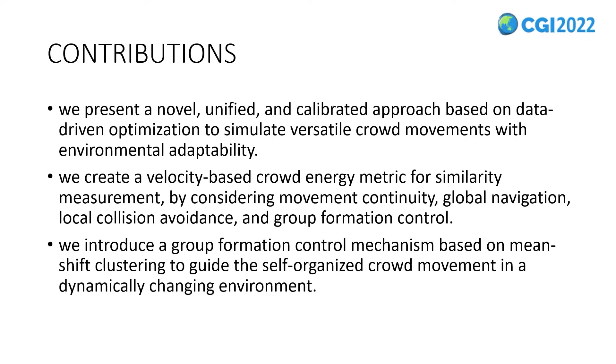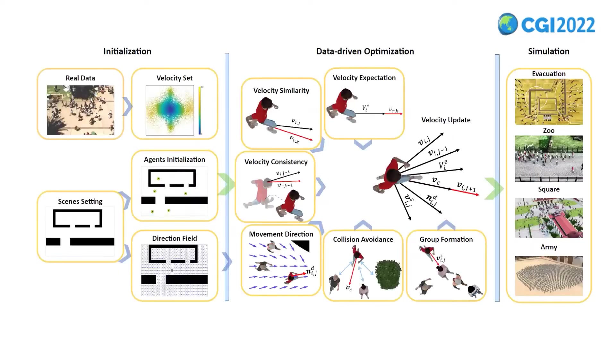Finally, we introduce a group formation control mechanism based on mean-shift clustering to guide the self-organized crowd movement in a dynamically changing environment. This is the pipeline of our approach. In the initialization stage, we create a velocity dataset based on real data. For a virtual scene, we initialize the positions of agents of a crowd and calculate the direction field according to the scene geometry.